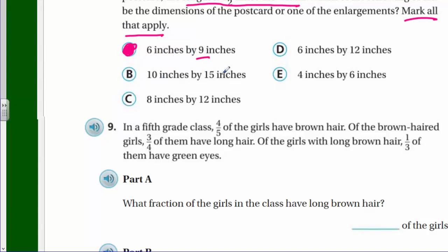Option B: 10 times 15 is 150 square inches - that's not one of our areas, so that's out. Option C: 8 inches by 12 inches. Eight times 12 is 96 - and we do have an enlargement of 96 square inches. Is 12 one and a half times 8? Half of 8 is 4, and 8 plus 4 is 12 - yes! That is one and a half times. So far we have two correct answers.